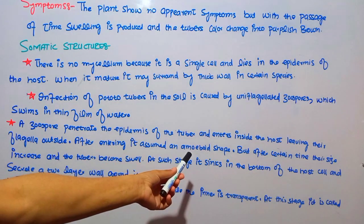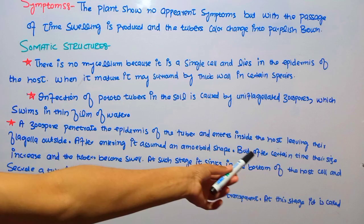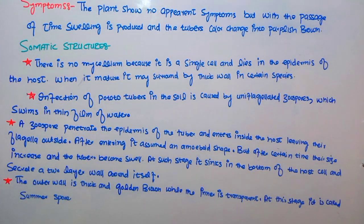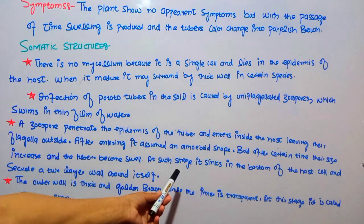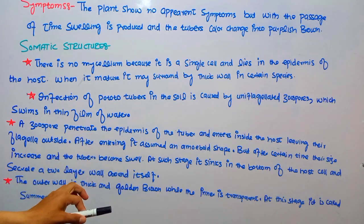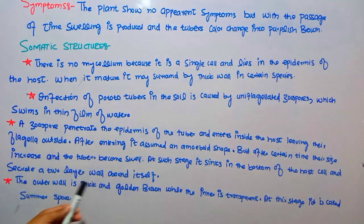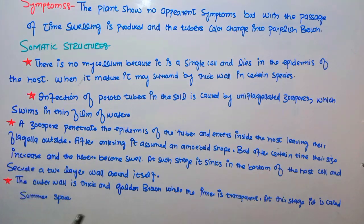After entering the host, the zoospore assumes an amoeboid shape — it becomes like an amoeba. After a certain time, its size increases and the tuber becomes swollen, which we call hypertrophy. At this stage it sinks to the bottom of the host's cell and secretes a two-layer wall around itself: the outer wall is thick and golden-brown, while the inner wall is transparent.